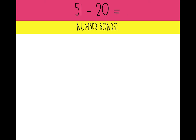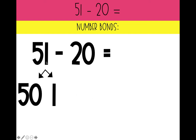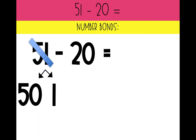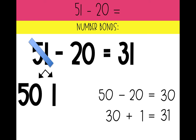Let's try it with our number bonds: 51 minus 20. Which number can we break apart into its tens and ones? 51. What should we break 51 into? 50 and 1, because we have five tens and one one. Let's cross out that 51. What do we need to subtract first? Our tens: 50 minus 20. What is five tens minus two tens? Three tens — that is 30. Remember, we want to add those ones that are left. So 30 plus 1 equals 31. 51 minus 20 equals 31.